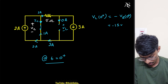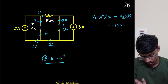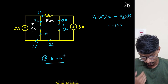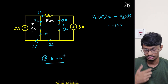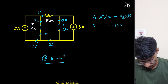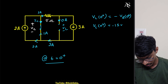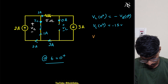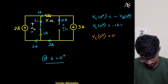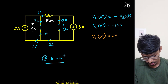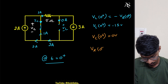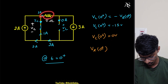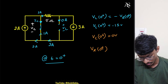Since the voltage is finite, the inductor current won't change instantaneously. So VL(0+) = 15 V is our first answer. VC(0+) = 0 volts, since the voltage won't change instantaneously. VR(0+) = 15 volts, since 3 amps flows through the 5-ohm resistor.